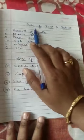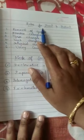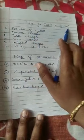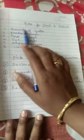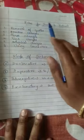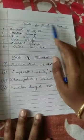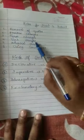Good morning students. Now we will see rules for direct and indirect speech. To change direct into indirect, we have 6 rules.